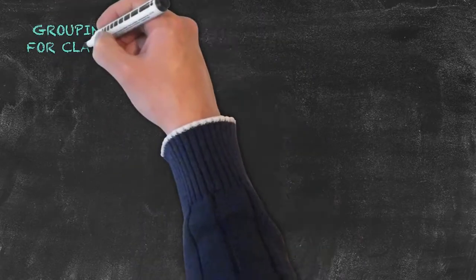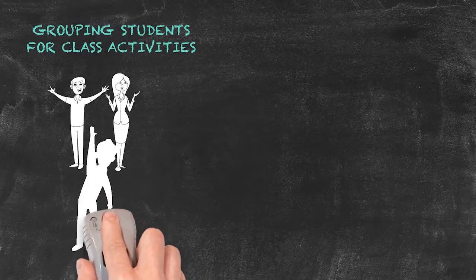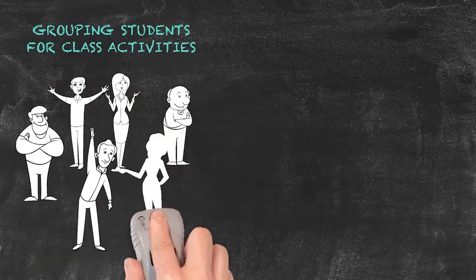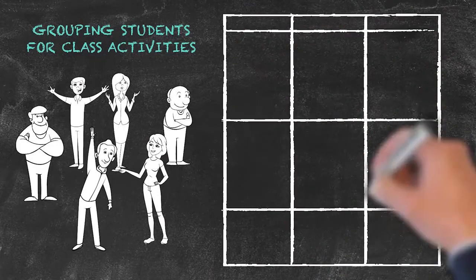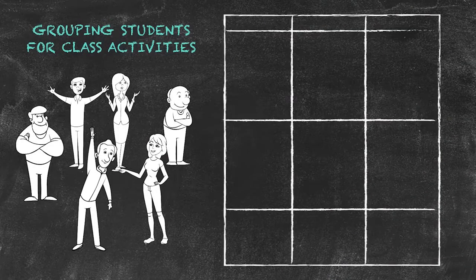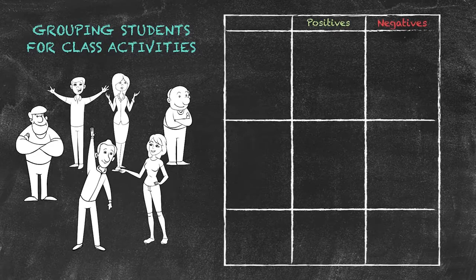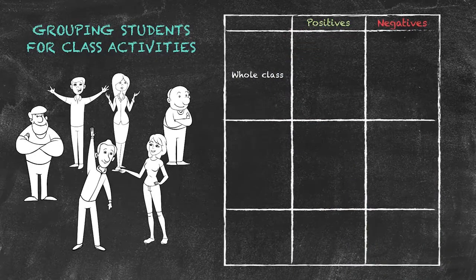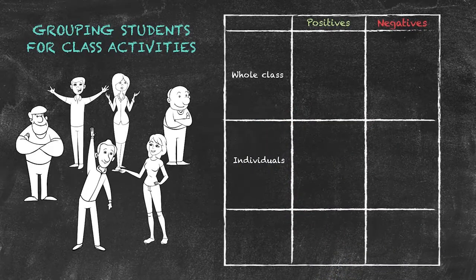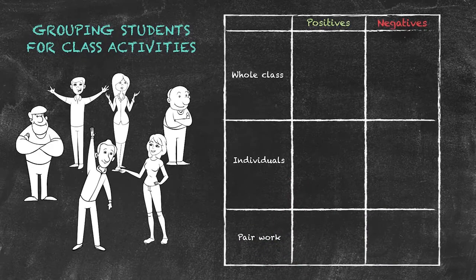Our next consideration is going to be how we actually group our students. There are perhaps three types of grouping arrangements that we can consider, and we'll look at the potential positives and negatives of each. We could arrange the class as a whole class, they could be working as individuals, and the final grouping arrangement to consider is that of small groups or indeed the use of pair work.